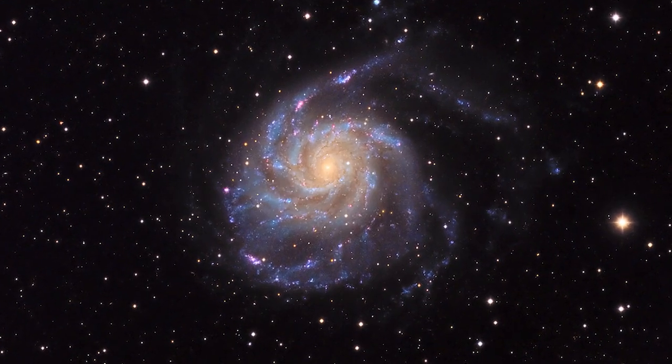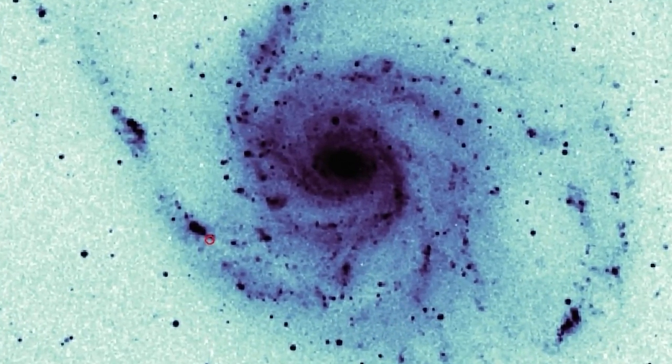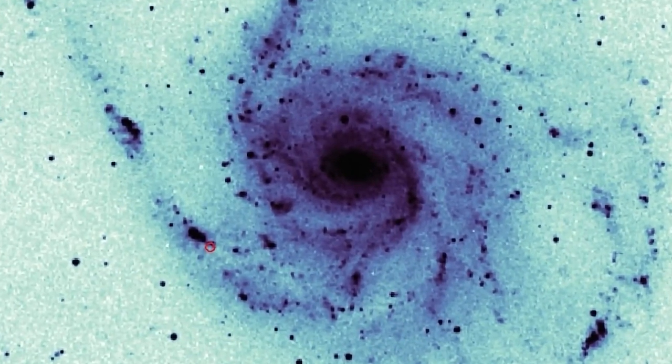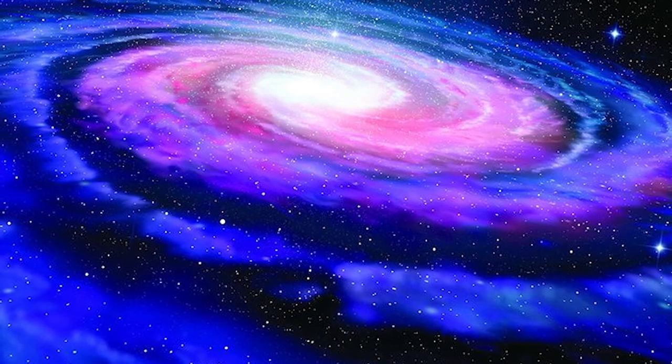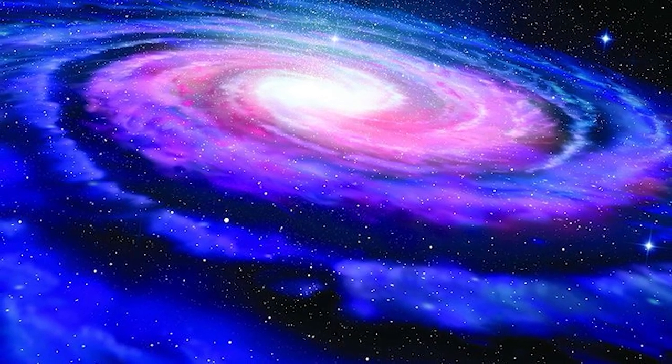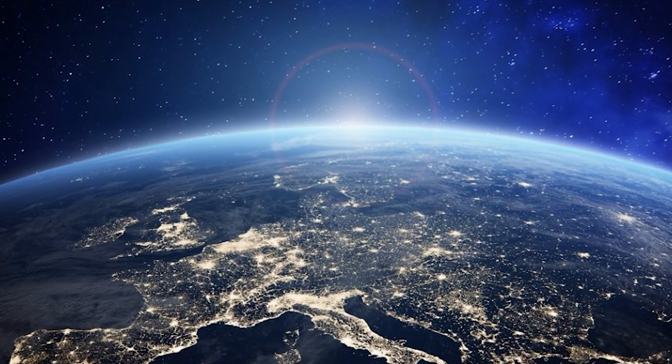Pinwheel Galaxy. The Pinwheel Galaxy, also known as Messier 101 or M101, is a prominent spiral galaxy located in the constellation Ursa Major. Discovered by Pierre McCain in 1781 and later catalogued by Charles Messier, this grand design spiral galaxy is a member of the Virgo supercluster, situated approximately 21 million light-years away from Earth.